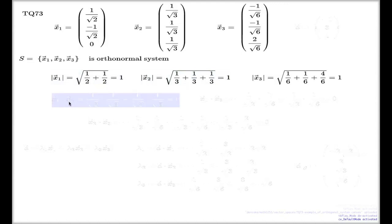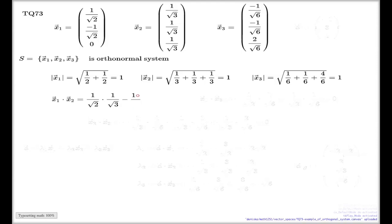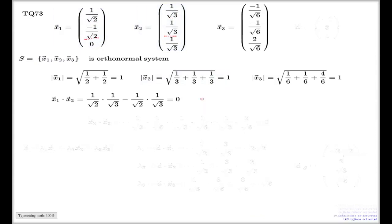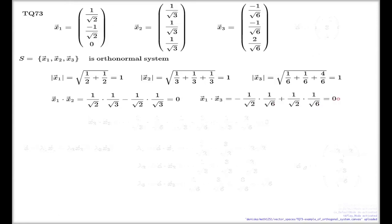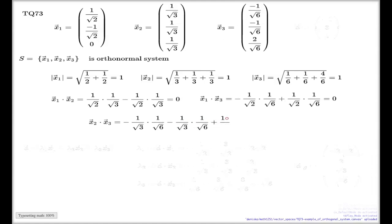Condition A is the pairwise dot product. I compute x1·x2 here: 1 over root 2 times 1 over root 3, negative 1 over root 2 times 1 over root 3, and the zero component — that is 0. Then x1·x3: that's again 0. And here's my x2·x3 product: it's negative 1 over root 3 times root 6, then another negative 1 over root 3 times root 6, and then 2 over root 3 times root 6 — that is 0 again.